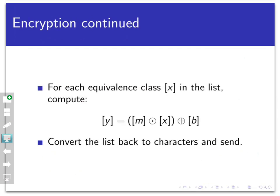So I can go through my entire message, turn it into a string of equivalence classes rather than letters. Then for each equivalence class X in my string, I'm going to compute M ⊙ X ⊕ B — that is, take the equivalence class of M, O-dot-multiply it with X, then O-plus that result with the class of B. The reason this is called an affine cipher is because the word 'affine' in mathematics is often used to denote things having to do with straight lines — this almost looks like Y = MX + B, the slope-intercept form for a line in the real numbers.